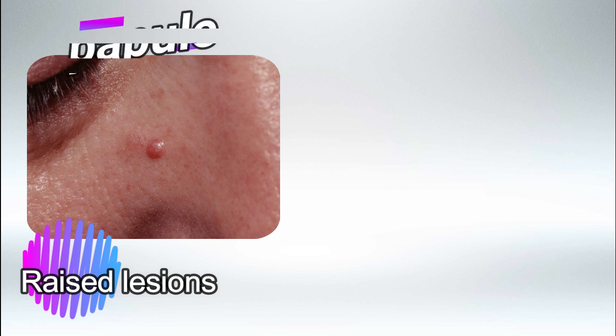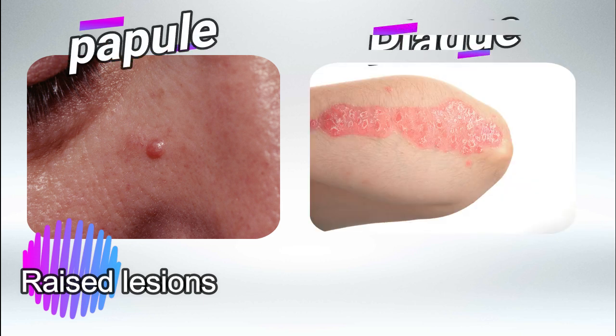Next we have raised lesions. If the lesion is small — less than 0.5 centimeters — it's going to be called a papule, and if it's large — more than 0.5 centimeters — it's going to be called a plaque. So a papule is a raised lesion less than 0.5 cm and a plaque is a raised lesion more than 0.5 cm.